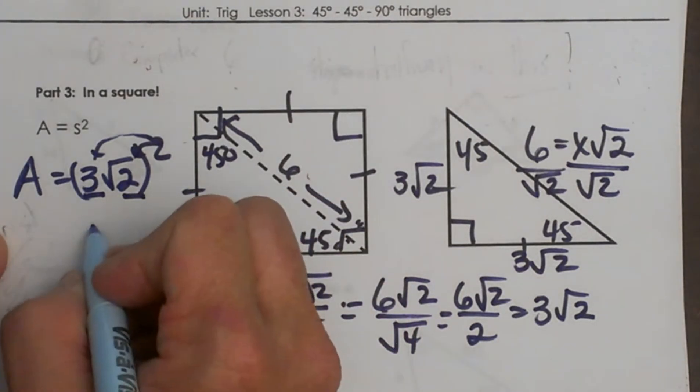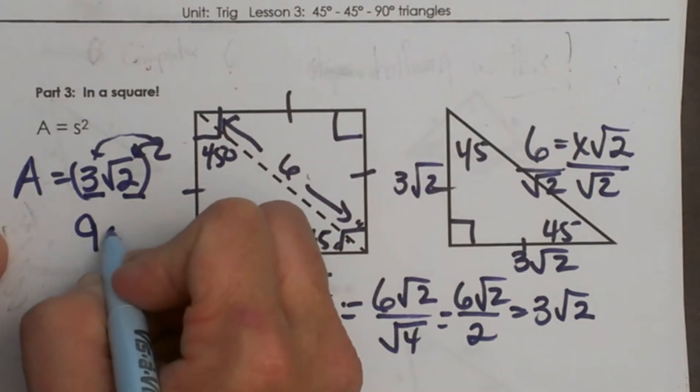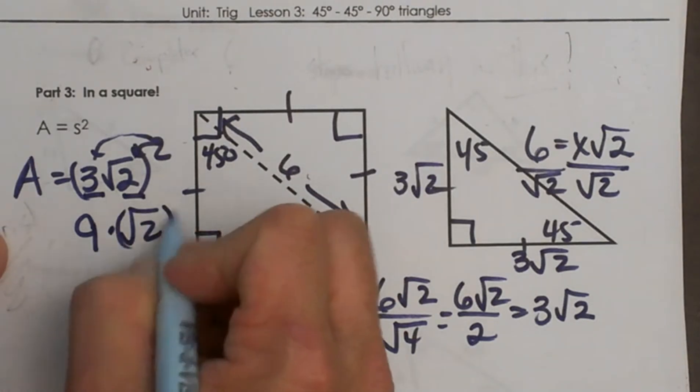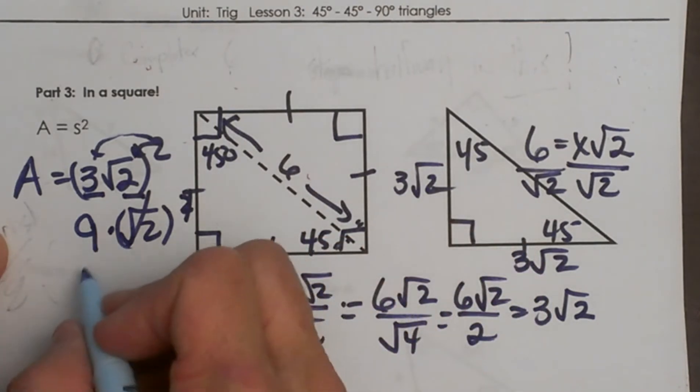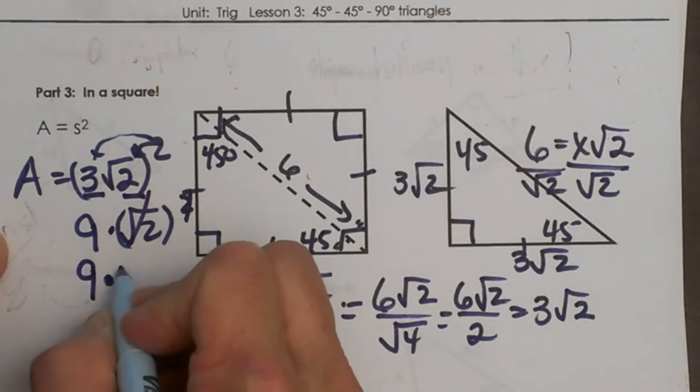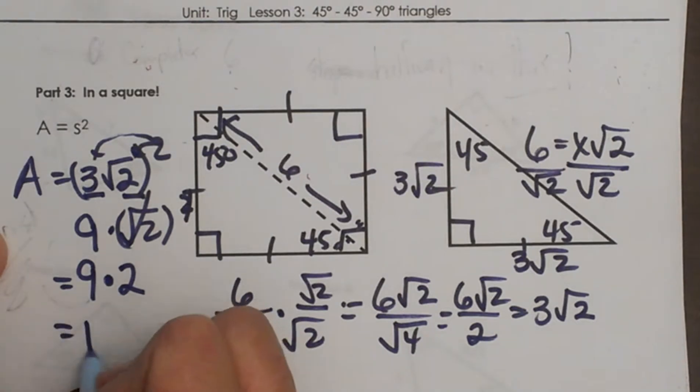So 3 squared is 9, and the square root of 2 squared just cancels out, so you are going to get the square root of 4 which is just 2. So 9 times 2, so the area is going to be 18 square units.